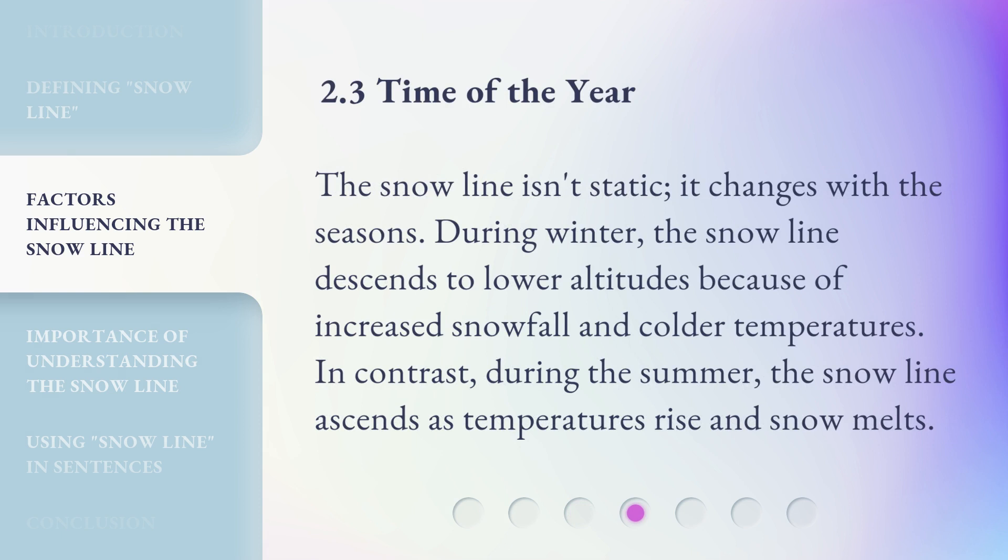Time of the Year: The snowline isn't static — it changes with the seasons. During winter, the snowline descends to lower altitudes because of increased snowfall and colder temperatures. In contrast, during the summer, the snowline ascends as temperatures rise and snow melts.